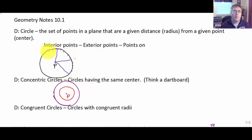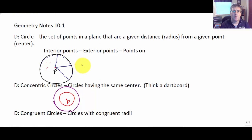We have interior points of a circle — the red points are inside — and the black points are all outside the circle. Then the points that make up the circle itself are points that are on the circle.